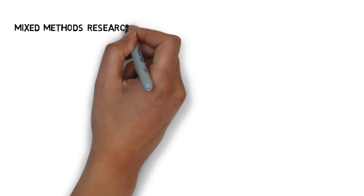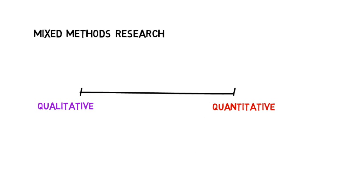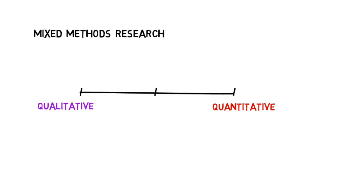Mixed methods research involves combining quantitative and qualitative research. It takes a more pragmatic approach whereby the type of research used should be based on what will best help you answer your research question.